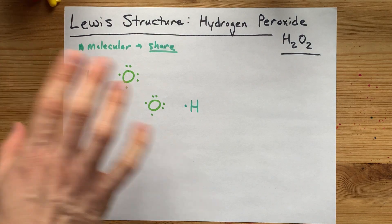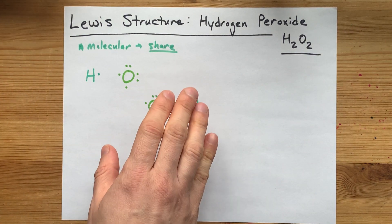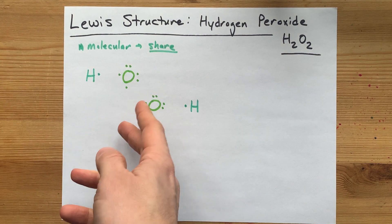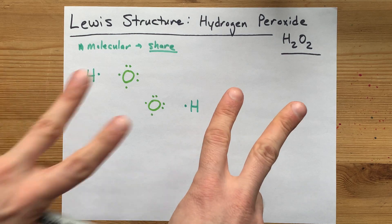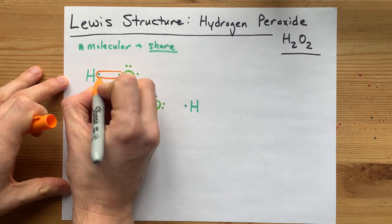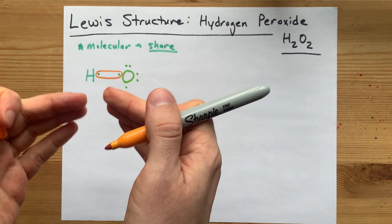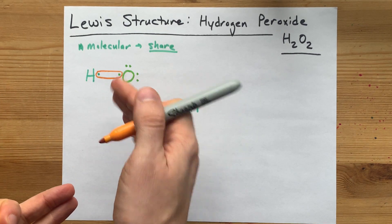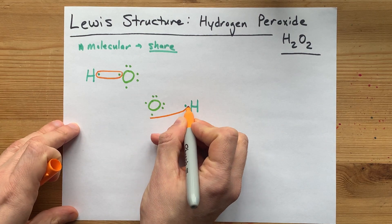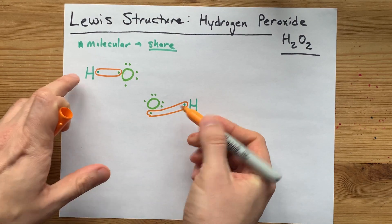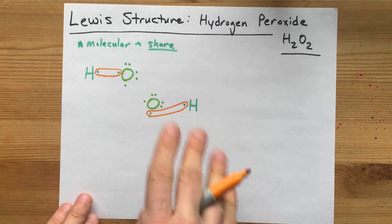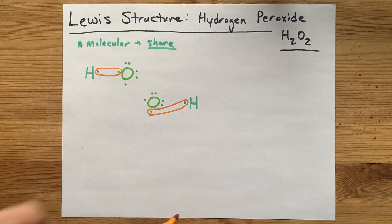Now, the way that covalent bonding works is with a sharing of electrons. So, oxygen brings six with it and wants eight total, that's the octet rule. So what happens is that hydrogen and oxygen, these two electrons combine and become shared, so they count towards both the oxygen and the hydrogen. Now, I can do the same thing here on the other side with that hydrogen. And by the way, hydrogen only needs two electrons to be happy. It follows the doublet rule, not the octet rule.